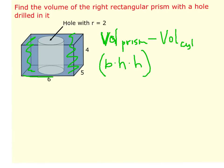Well, if you look at your picture, you can see that the rectangle is a 6 by 5 rectangle. So 6 times 5. And you can see that the height of this prism is 4. So I'm going to multiply by 4.